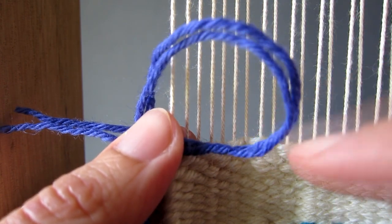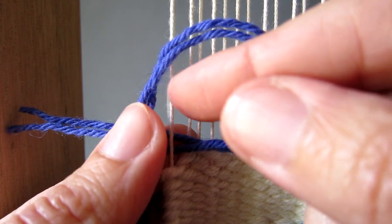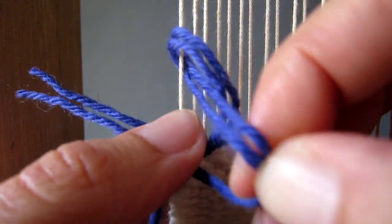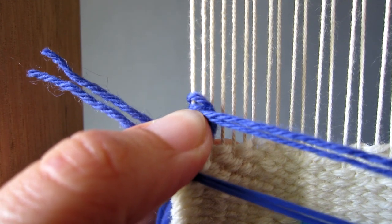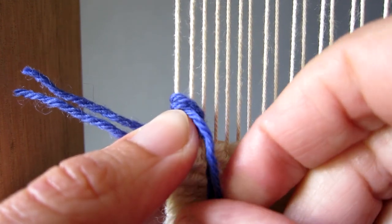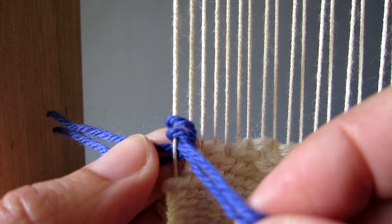Then going between the first and second warp threads, pull the long end of the thread back through to the front of the weaving area, making sure your left hand holds the yarn in place and pull the thread gently downwards.